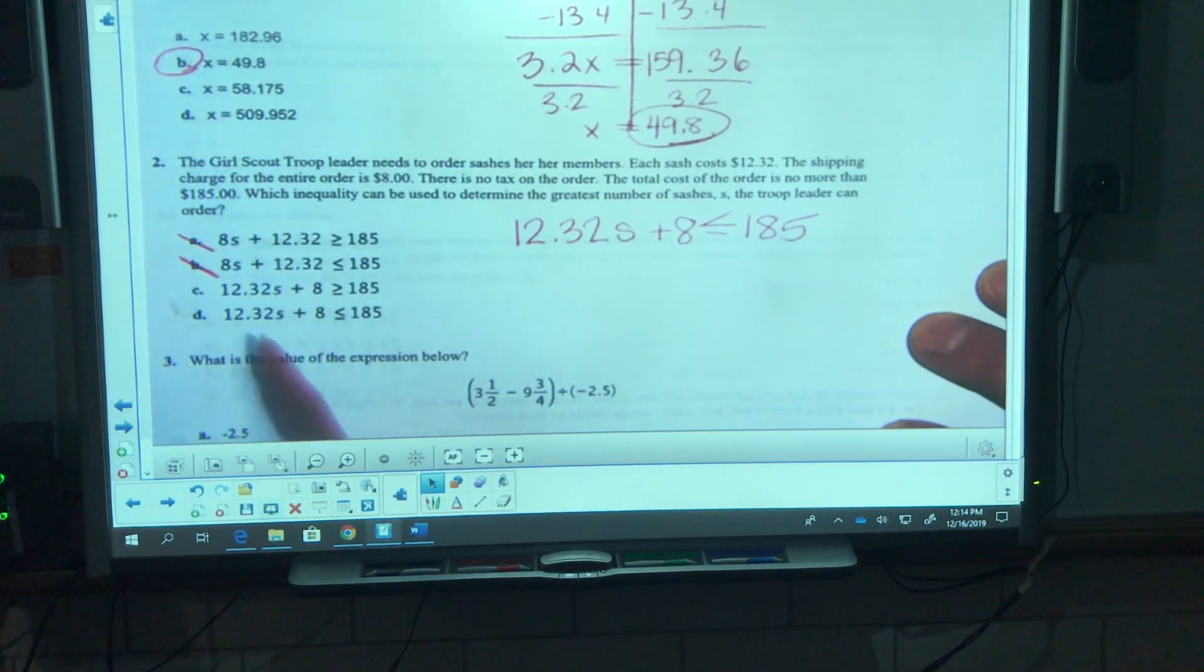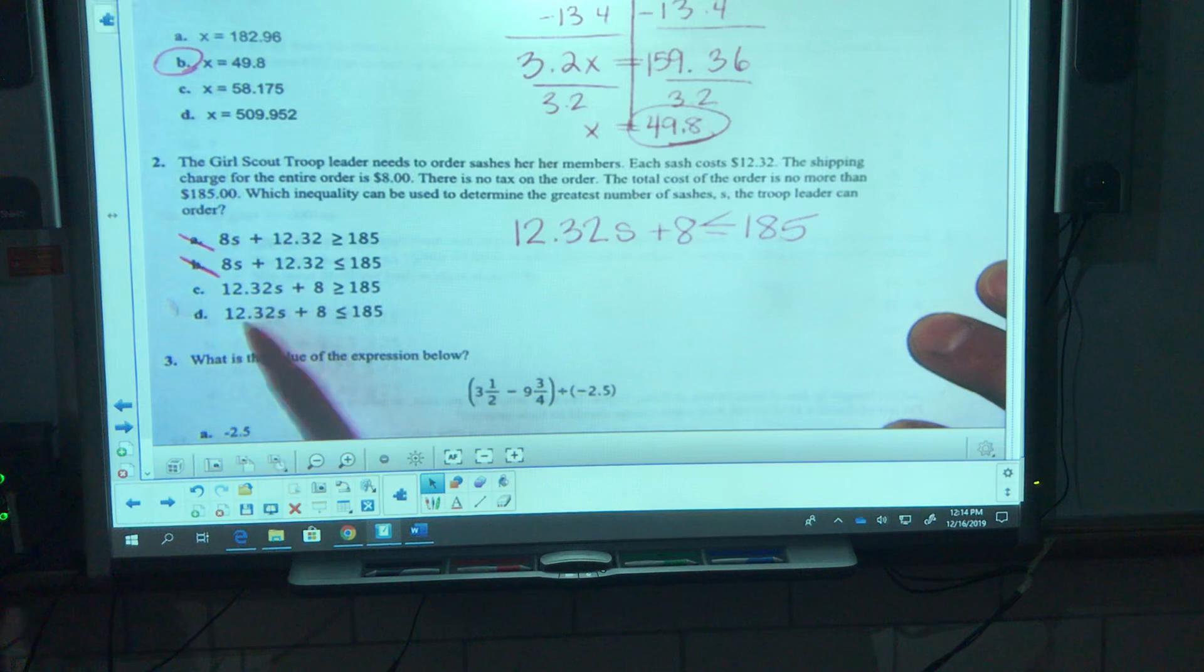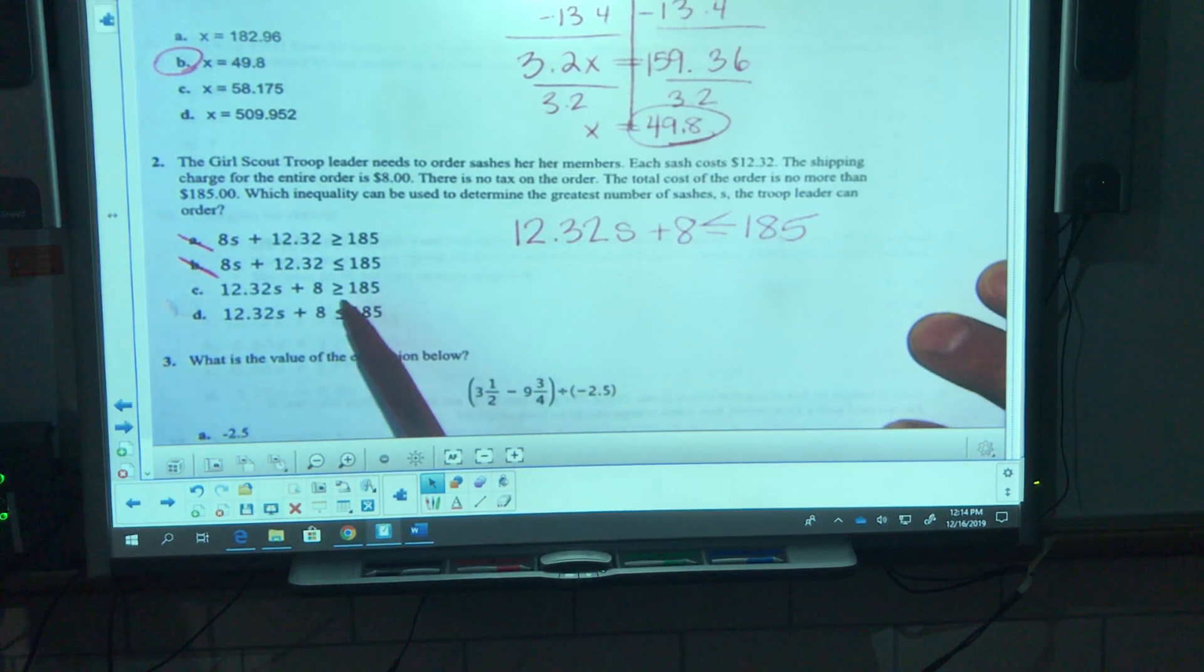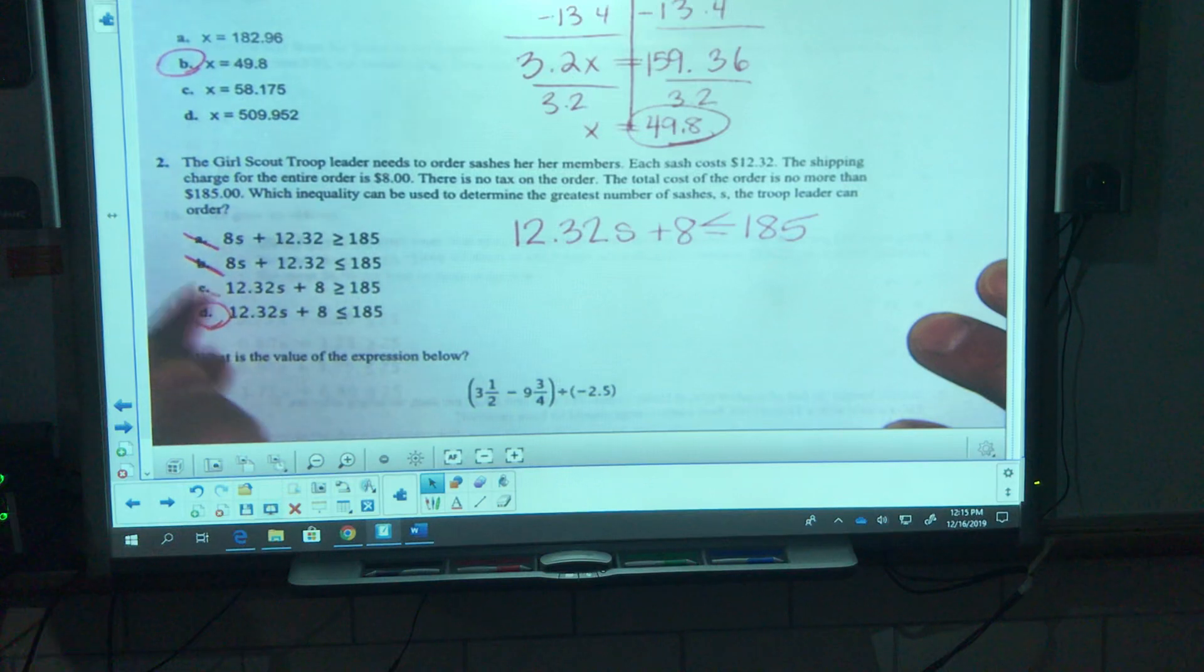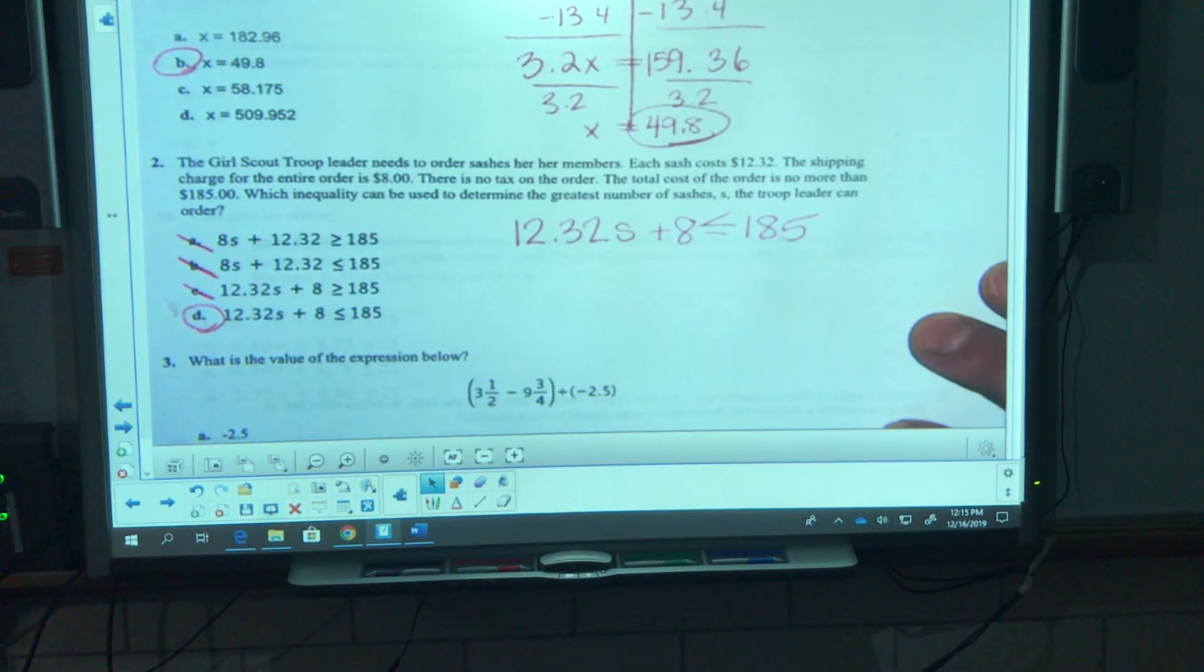Now let's look what they have here. It can't be 8s because the sashes aren't eight dollars each, so it's got to be either C or D. It's either greater than 185 or less than, and we already said it's got to be no more than, so it can't be more than. I'm gonna cross off letter C, it's got to be D.